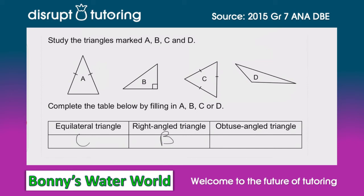We come to D and D must be the right answer. Do you see there is the right angle? If we look at the right angle, we notice that one angle is bigger than the right angle, and therefore our obtuse angle triangle is D.